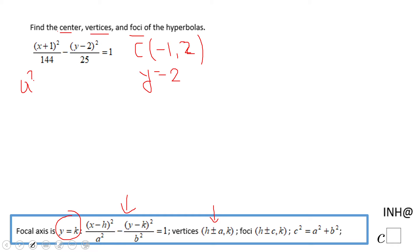For finding the a, we need to start from a square, which is 144. So a will be plus or minus square root of 144, which is 12.